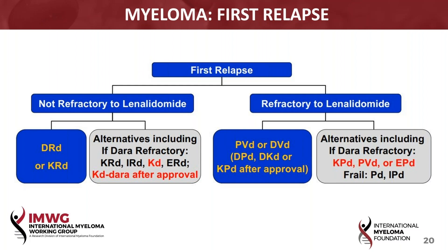After upfront bortezomib, we can then deploy carfilzomib, and we've got ixazomib — all of those give us good choices. The interesting part of the slide is: if they're daratumumab-refractory, what do we do? That's become a new challenge because we've generated strategies to tackle lenalidomide failure, but when daratumumab fails a patient, that's an important area. The combinations suggested are excellent — we will often use carfilzomib with cyclophosphamide as a platform there, and now with the approval of isatuximab, there's an opportunity to bring that in.